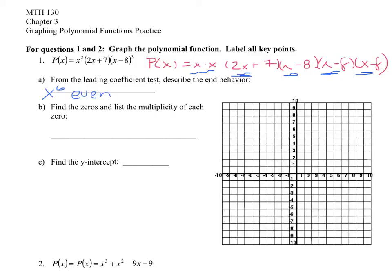All even degrees will have end behavior like X squared, so it rises on both ends. You can either draw a little picture or say it rises and rises. Now find the zeros and list the multiplicities.